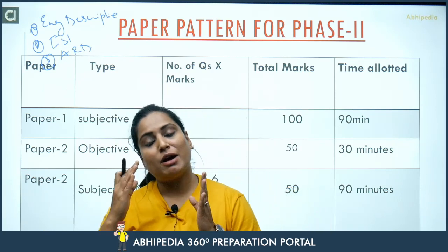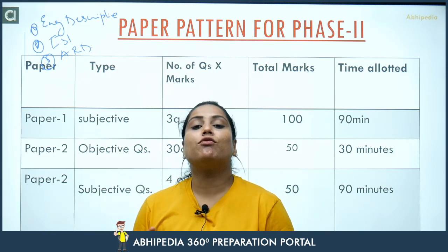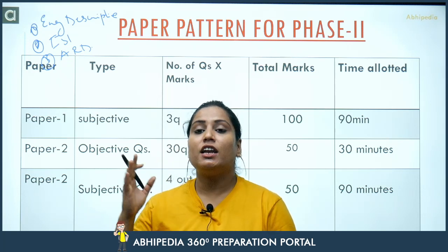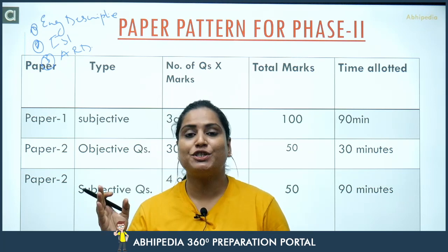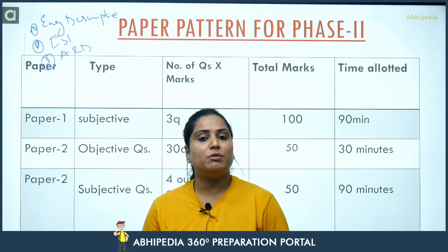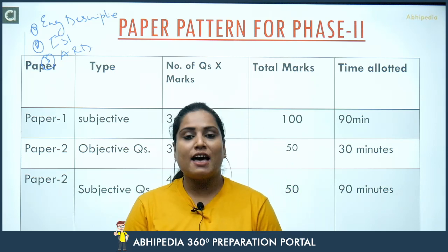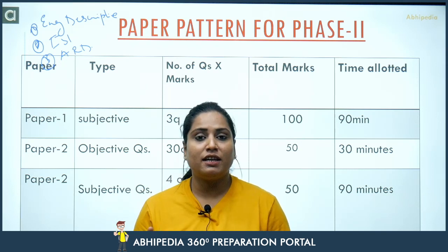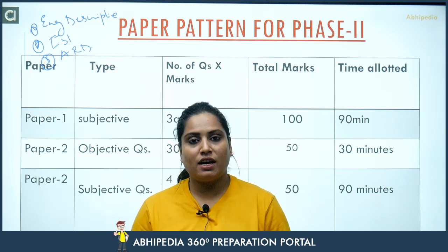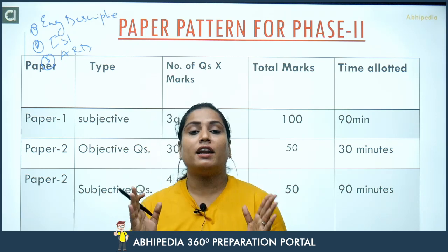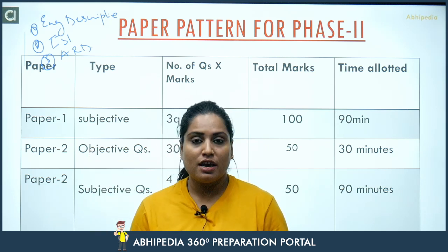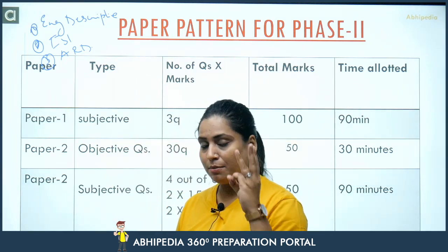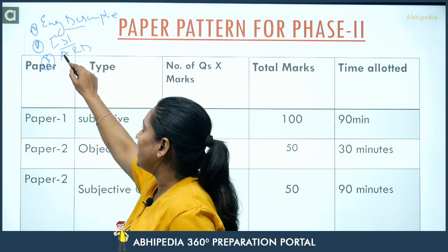Toh hum aaj dekhenge kaun kaun sa paper hai. Types of questions — is exam mein objective plus subjective questions aapko milenge. Number of questions, total marks, marks per question, and time allotment kya hai. As we know, hamaara jo descriptive exam hai phase 2, hum ye exam pen se nahi de rahe hain — with the help of keyboard hume yeh exam dena hai. Teen papers honge: English Descriptive, ESI, and ARD.